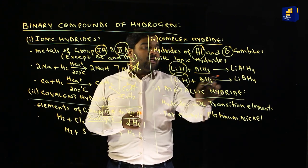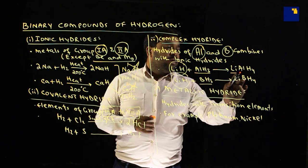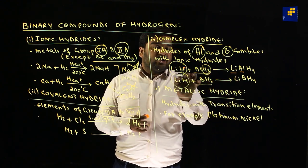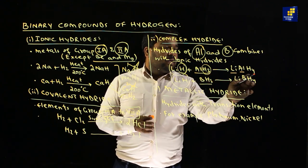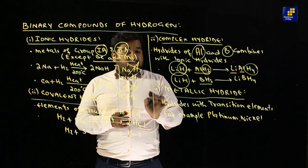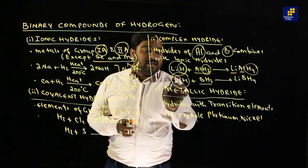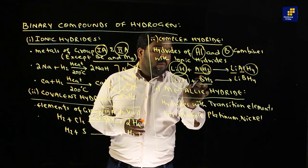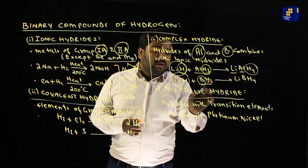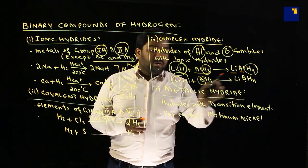For example, lithium and aluminium with 4 hydrogen atoms form LiAlH4 (lithium aluminium hydride). Similarly, lithium and boron with 4 hydrogen atoms form LiBH4 (lithium borohydride).